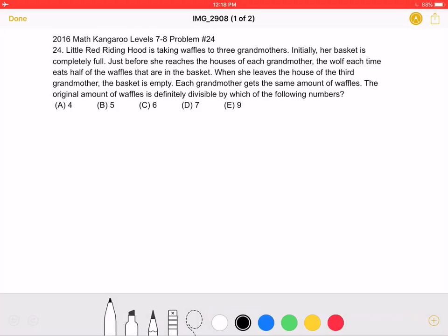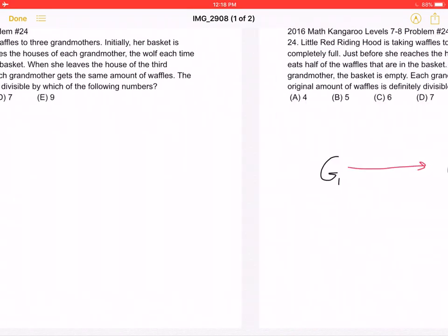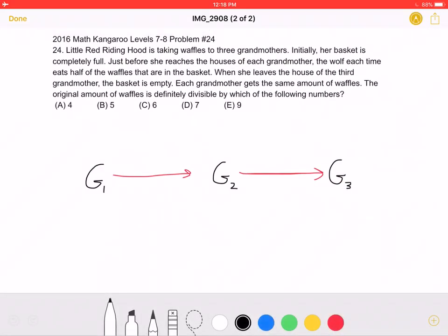This is the problem as it originally appeared on the test, and here is where we'll be doing the solution. To start, let's give x waffles to each grandma, since the problem tells us that each grandmother gets the same amount of waffles.